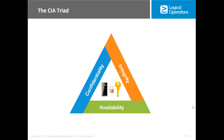The first definition is the CIA Triad. CIA stands for Confidentiality, Integrity, and Availability. How can you define security? Let me give you a small example. Assume that you have a laptop and this laptop has a lot of critical and sensitive information on it.